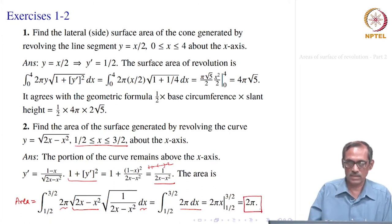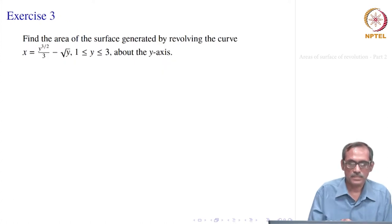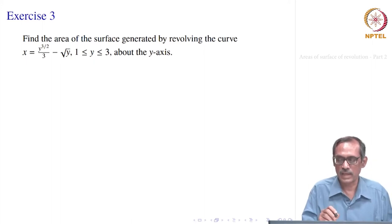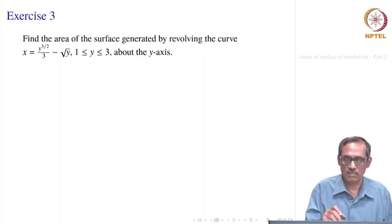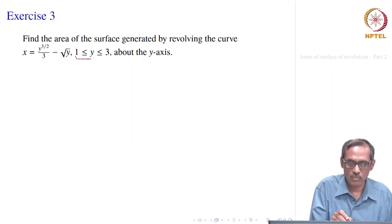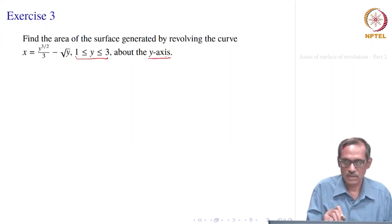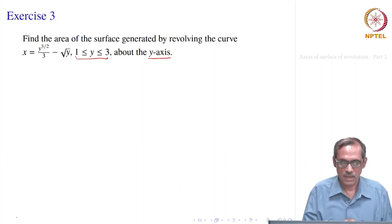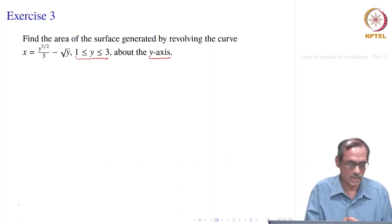You should verify these computations; if there is some mistake, correct it. Let us take another problem: find the area of the surface generated by revolving the curve x = y^(3/2)/3 - √y, where y varies from 1 to 3, about the y-axis.